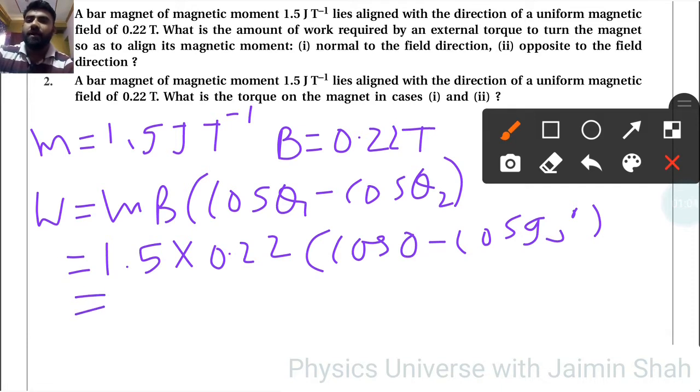...so that is 0.33. Cos 0 is 1 and cos 90 is 0, so 0.33 joules is the work done during alignment from 0 to 90 degrees.